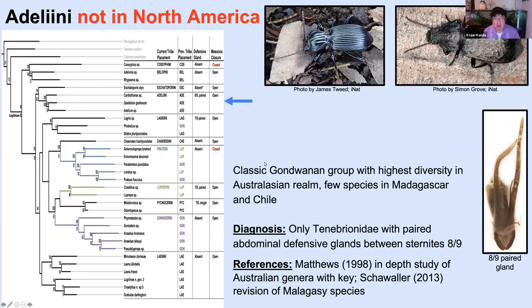It's really strange that a beetle only known from obscure habitats in California is sister to a classic Gondwanan group, the Adeliani. This is a tribe occurring throughout the Australasian region, extremely diverse in Australia and New Zealand, with a few species getting into Madagascar and southern Chile, but nowhere else. There was a species from Ecuador classified within this tribe, but that was an error. The Adeliani are unique in having paired glands between abdominal sternites eight and nine — really long glands. Many forms are very carabid-like and often get mixed up for pterostichines. There is a great generic key published to the Australian fauna, and a key to the Malagasy species, but the Chilean ones need more careful study.